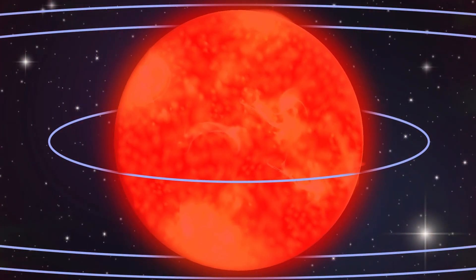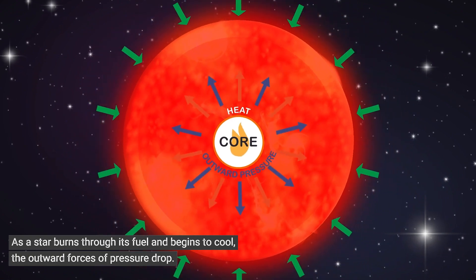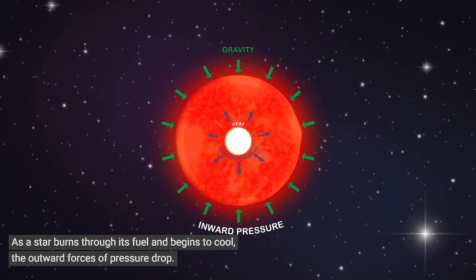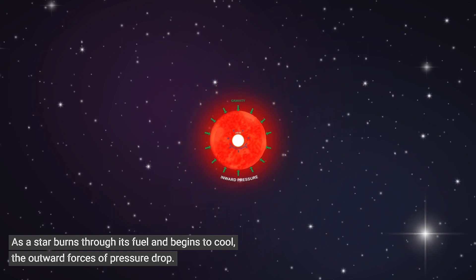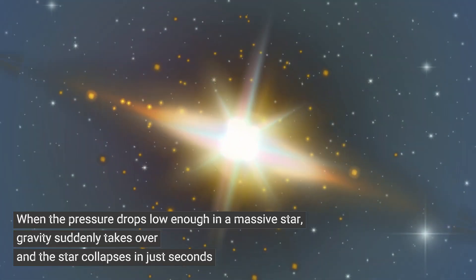The star's struggle ends in a dramatic climax. This collapse triggers a monumental explosion, one that is so powerful it flings the outer layers of the star into the vast expanse of space. This cataclysmic event, the supernova explosion, marks the end of the star's life.